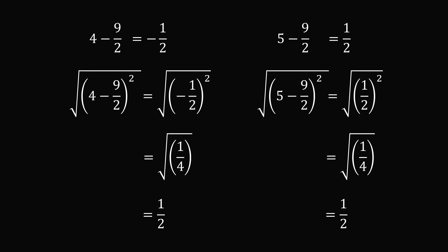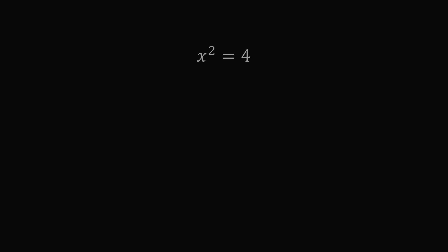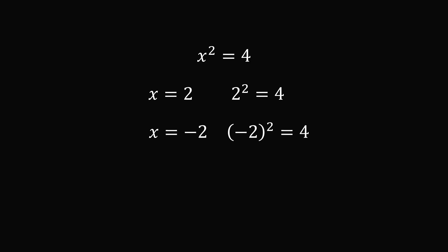So why is that? Many students' confusion begins when solving equations like x squared equals 4. One solution is x equals 2, but another is x equals minus 2, since the square of minus 2 also equals 4. This leads students to wonder: is the square root of 4 equal to plus or minus 2? Well, no. When we write the square root of 4, it is only equal to plus 2.